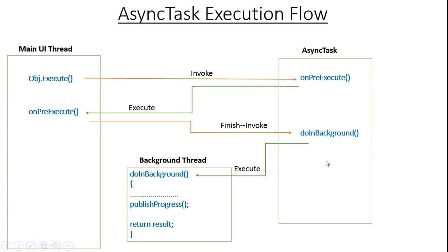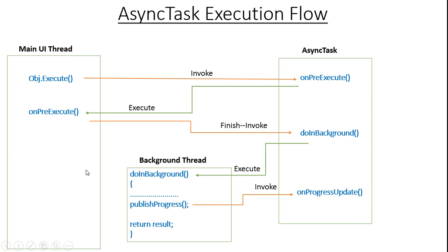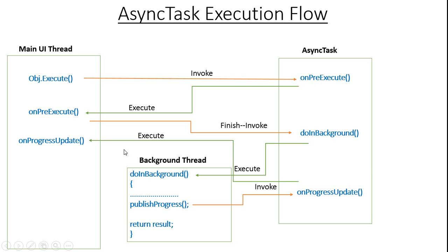Now executing the doInBackground method inside the background thread — if you call the publishProgress method inside doInBackground, the Android system will call the onProgressUpdate method inside AsyncTask. Calling publishProgress invokes onProgressUpdate, and the system places the onProgressUpdate method inside the UI thread and executes it, so that you can publish the progress on the UI thread.